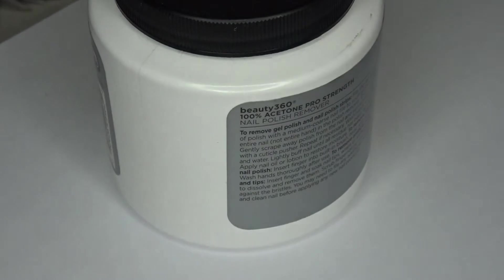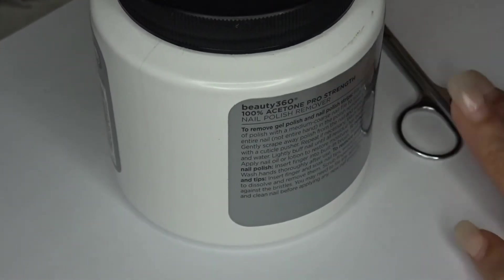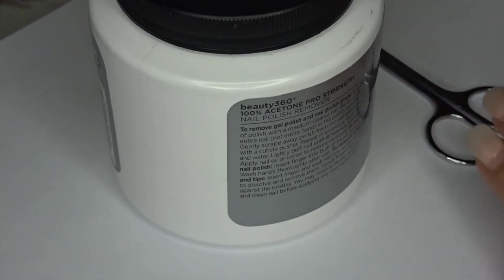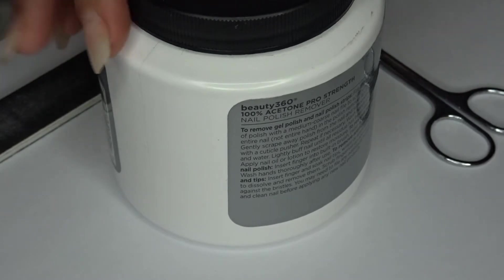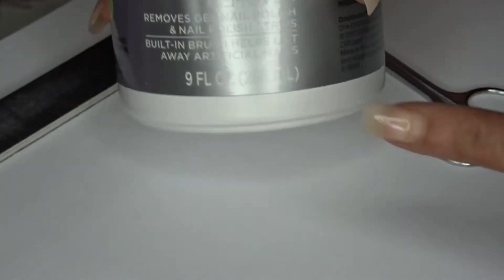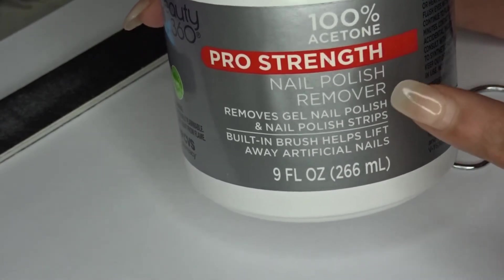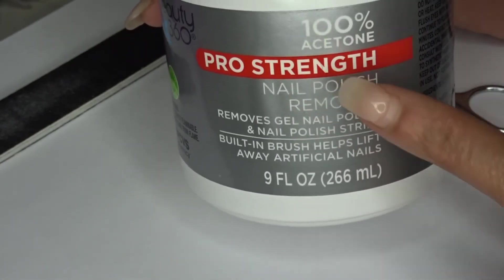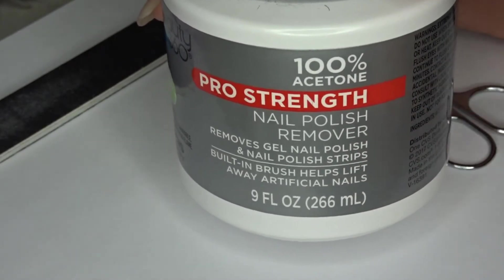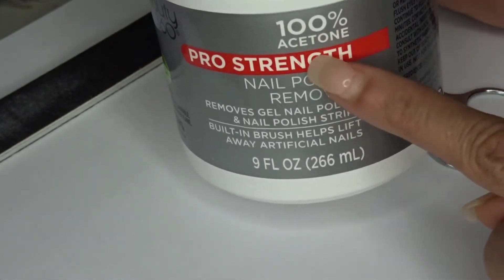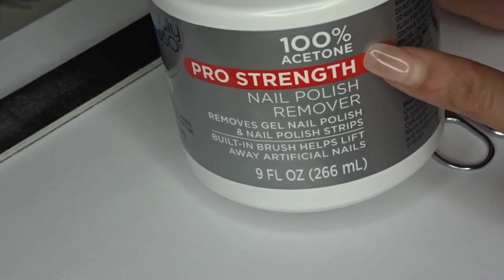Let's start off with first the tools that I'm going to be using to remove my acrylic nails. Now, this product here is the most important product along with what you use to take off your nails. You need 100% strength acetone. Not nail polish remover, but 100% acetone. If it's not 100% acetone, it will not remove acrylic. So you have to make sure that it is 100% acetone.